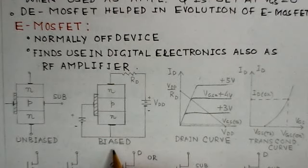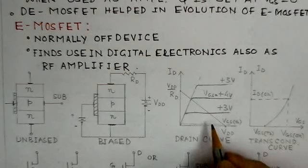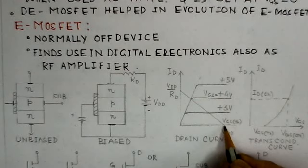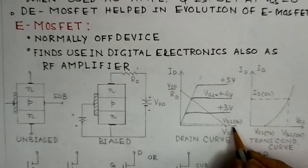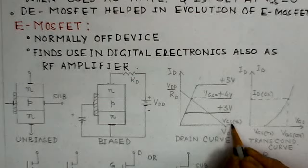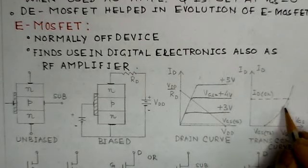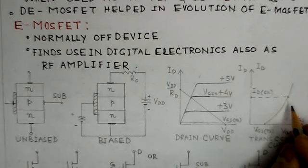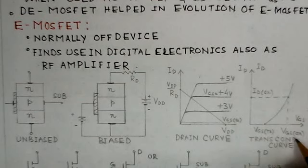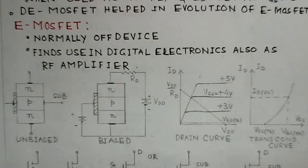The biased E-MOSFET has VGS positive, with a drain resistance and VDD supply. The drain curve exists only for positive values of gate-to-source voltage. Below the VGS threshold, no current flows in the circuit. Curves are shown for VGS of 3V, 4V, and 5V. The transconductance characteristic shows ID versus VGS. From the data sheet values of ID(on) and VGS(on), you can determine RDS(on), the on-resistance of the device.